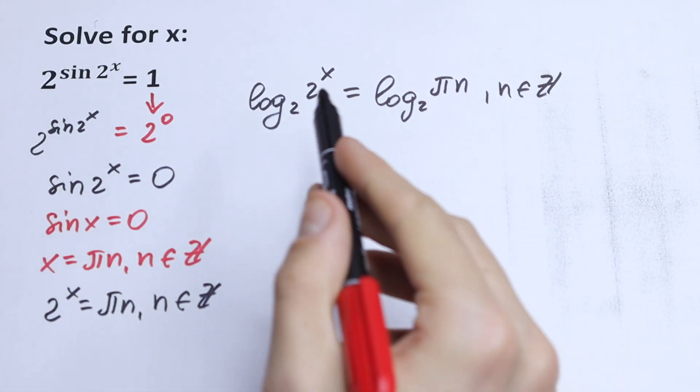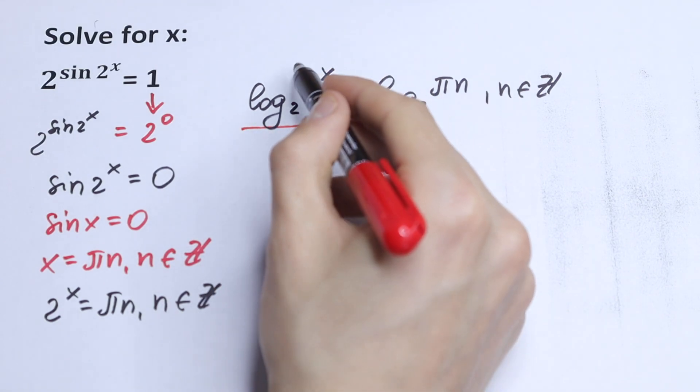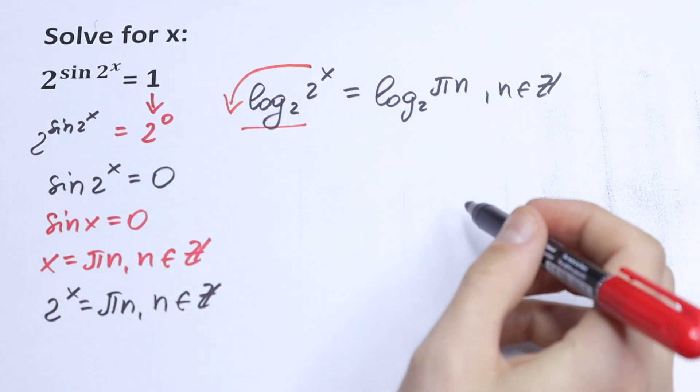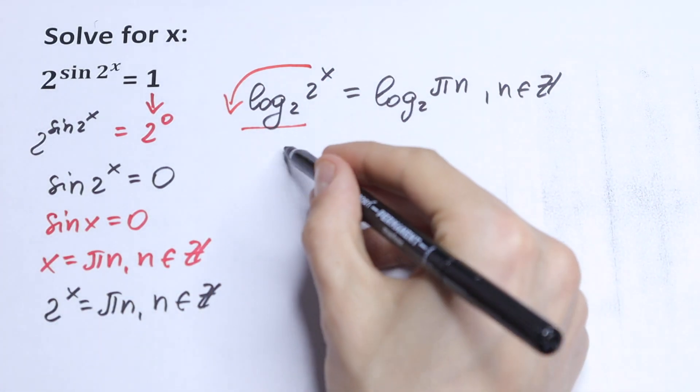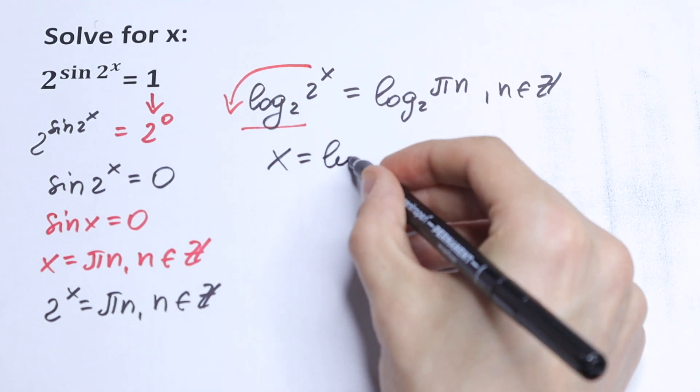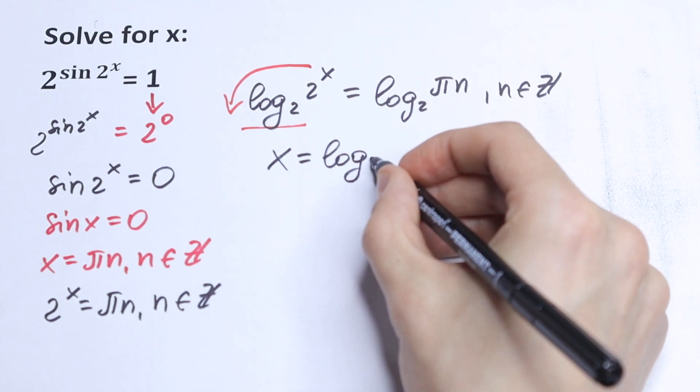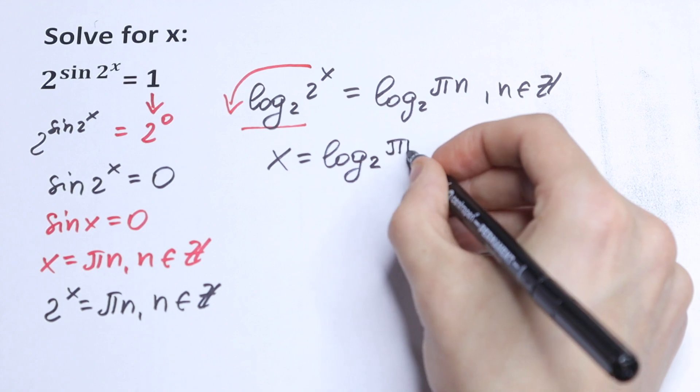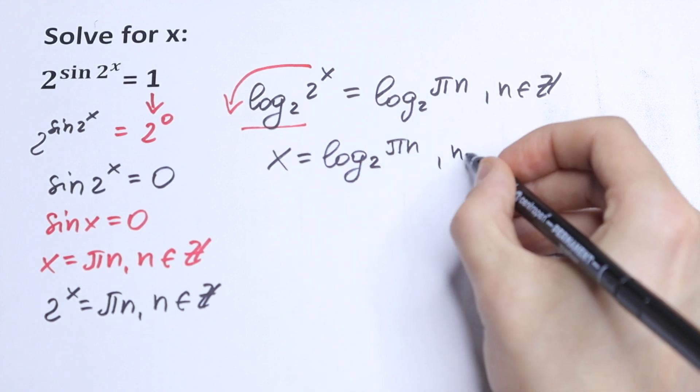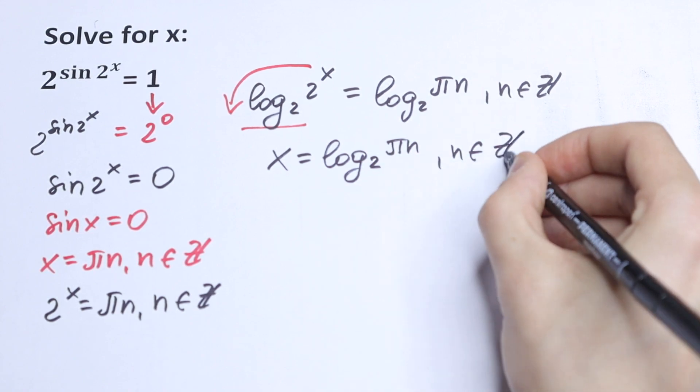Okay, this will be equal to 1, log base 2, and this x jump right here in the beginning. So as a result, we will have that only our x equal to log base 2 of πn, n is ℤ.